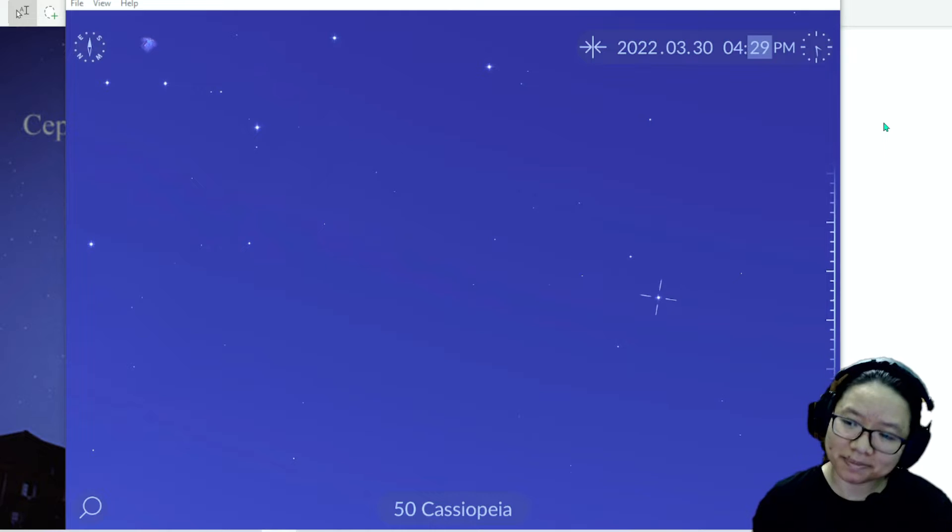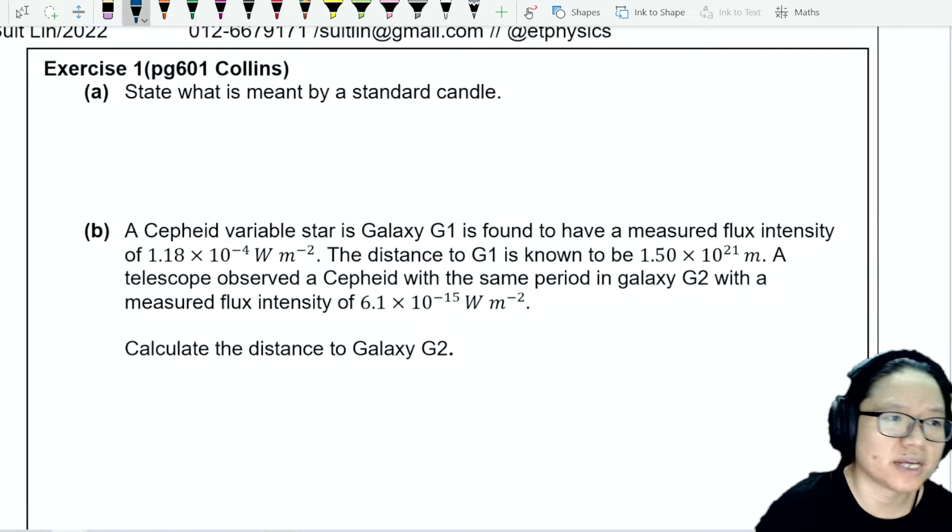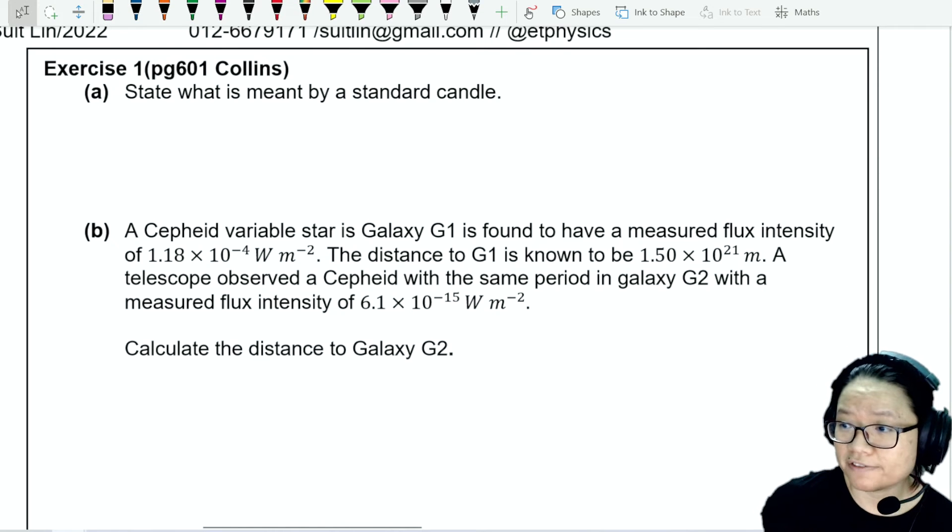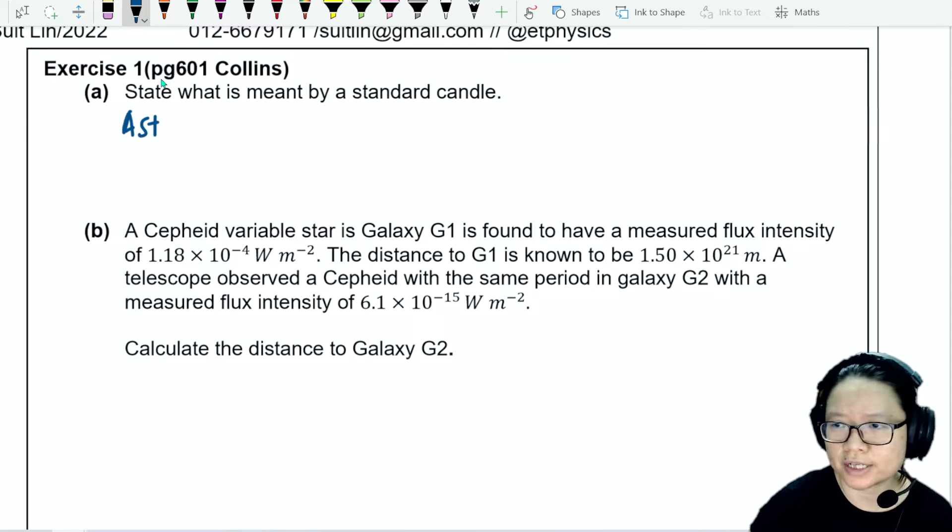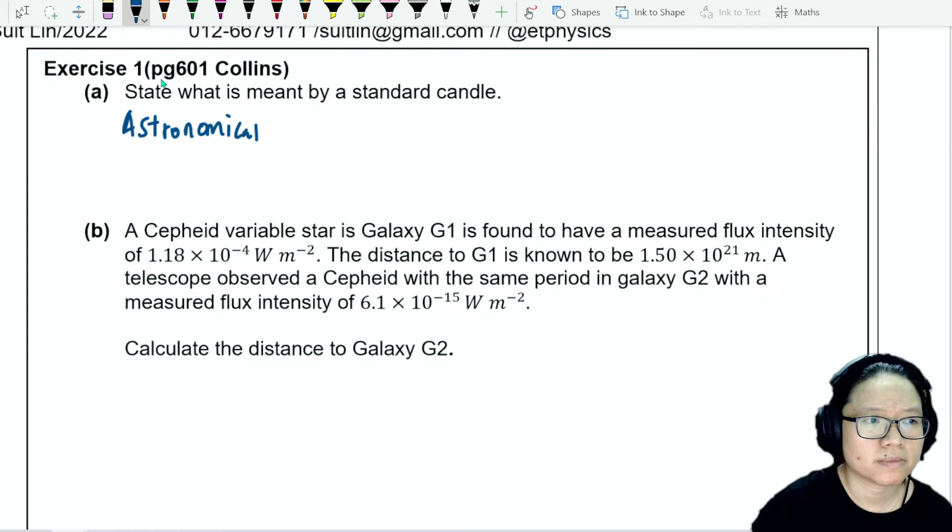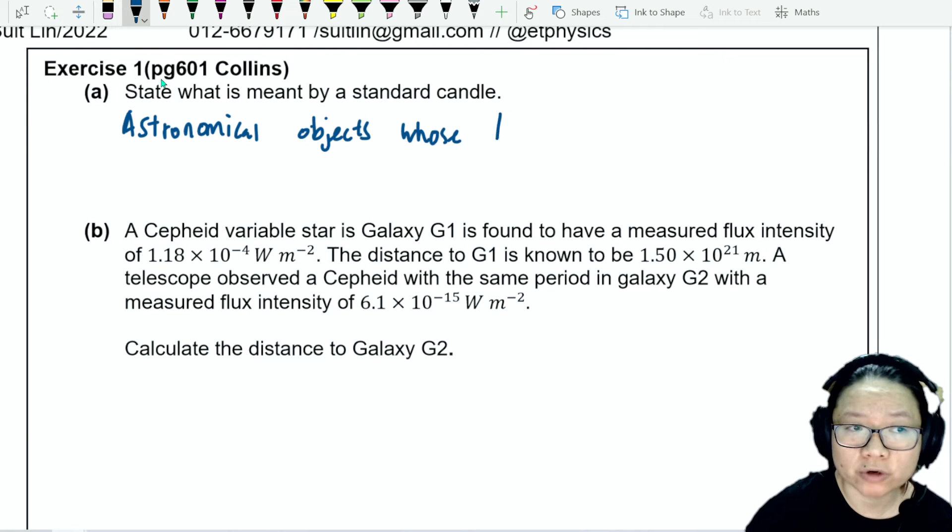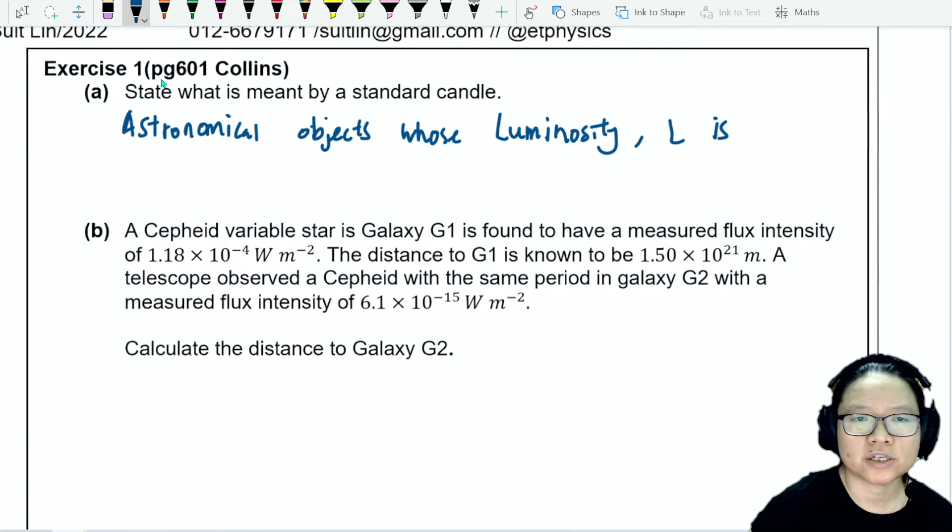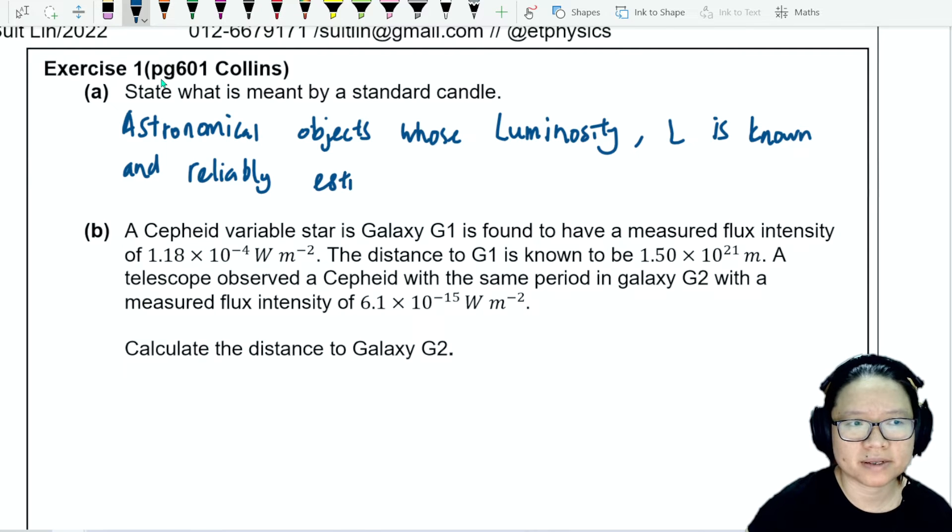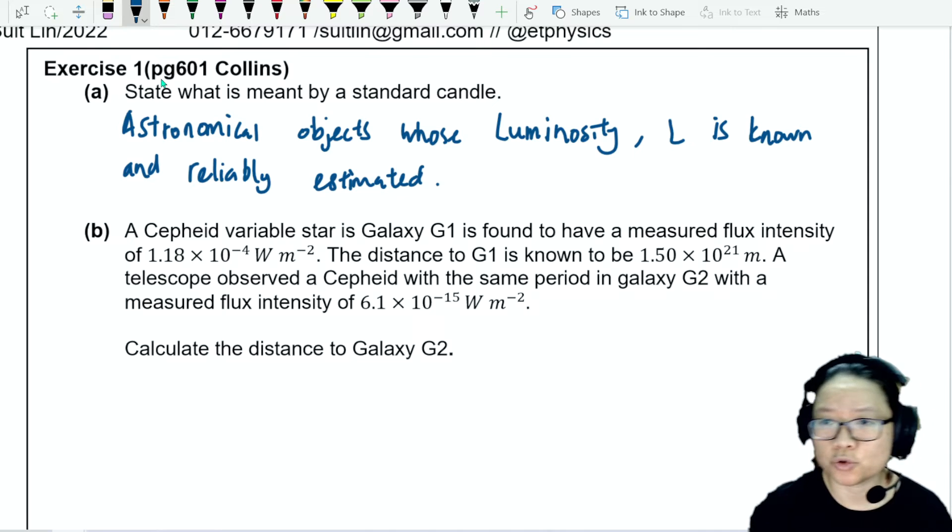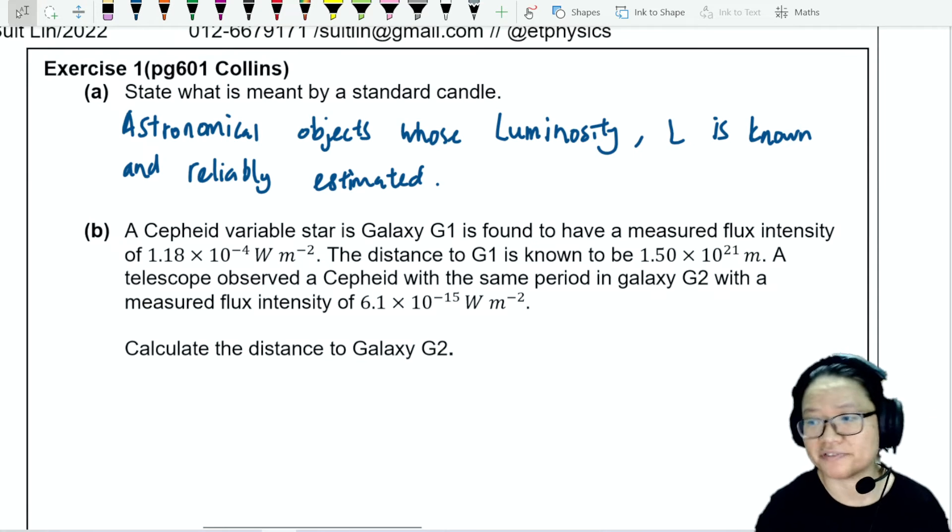Let's look at an example. This is from Collins as well. You're asked to briefly state what is meant by a standard candle. So Cepheid variables are an example of a standard candle. But basically, they are astronomical objects, things that you see in the sky. What do we know? Luminosity. L is known and reliably estimated. You have watched the video, and you know how we estimate the luminosity of Cepheid variables.